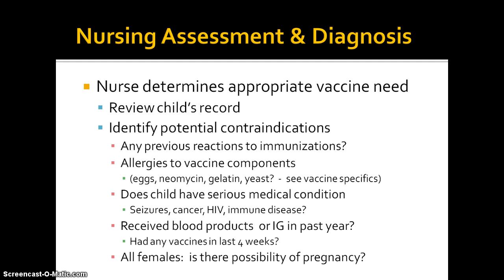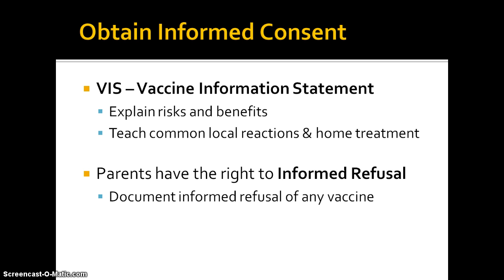All females need to be assessed for the possibility of pregnancy. The nurse needs to then obtain informed consent from the parents. With every vaccine there's a vaccine information statement accessible on the CDC website, so we should print out those sheets and go over the information with the parent, explaining risks and benefits for each vaccine and teaching the parent about common local reactions to expect and home treatment they can use. Parents do have the right to informed refusal of vaccines for their children, and informed refusal is documented as well.